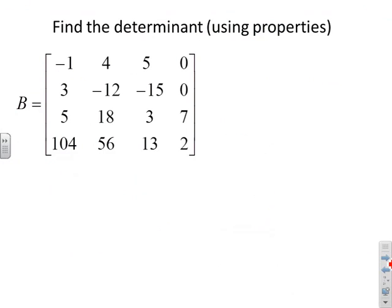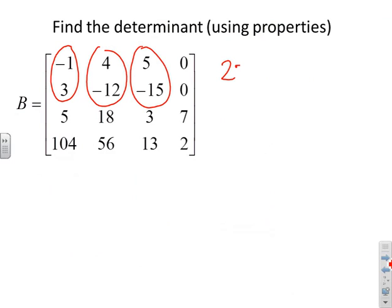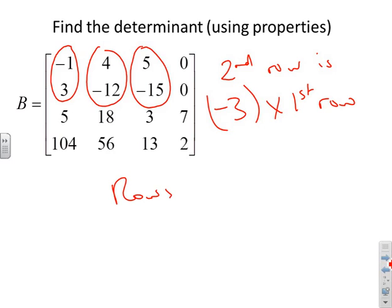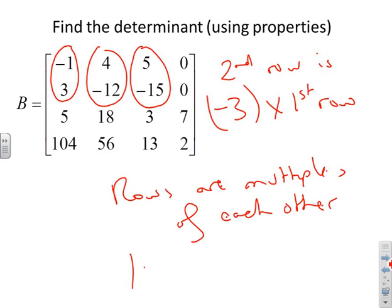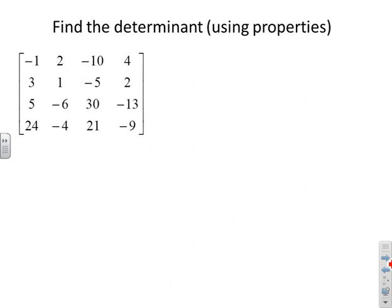Here are some pen-and-paper examples: find the determinant using properties. For the first example, inspect the rows — row two is minus three times row one. Since the rows are multiples of each other, the determinant is zero immediately, with no further computation needed. This illustrates the power of knowing these rules.